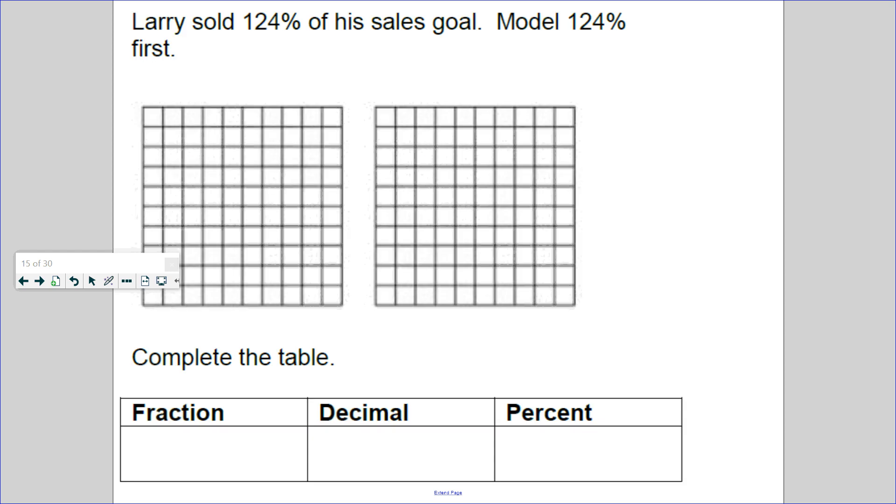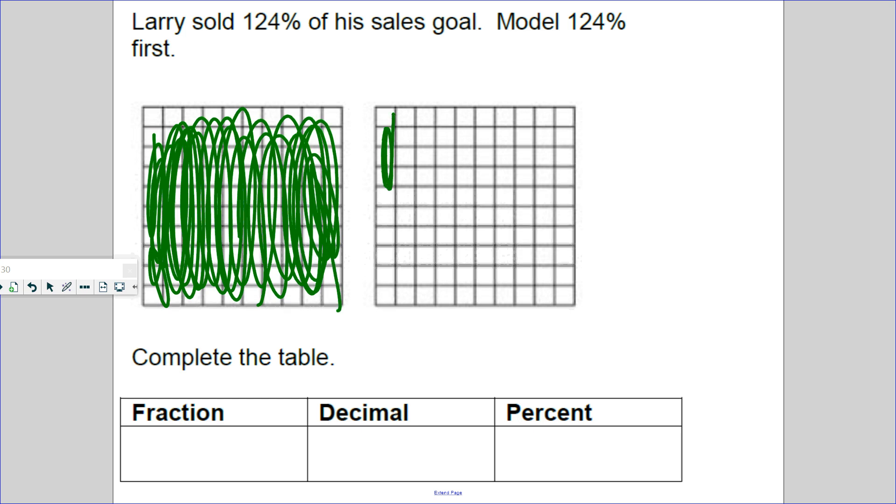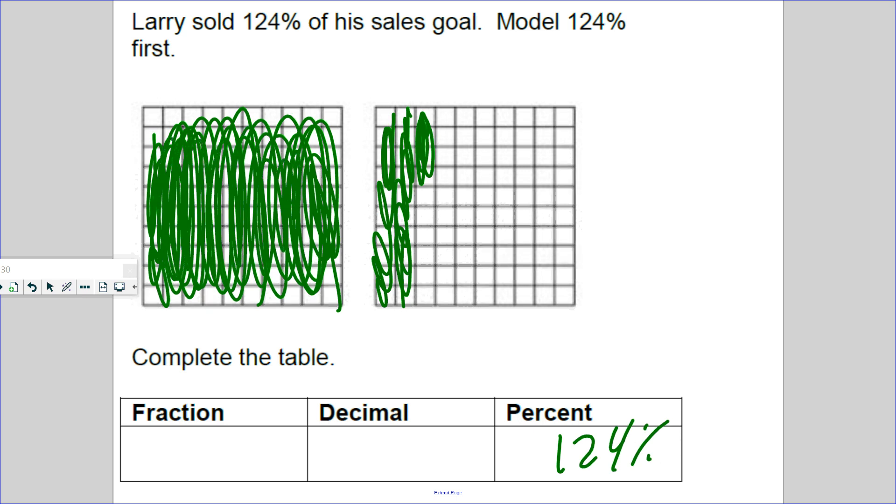And the last one is probably the hardest. Larry sold 124 percent of his sale goal. Model this. If I shade in all of this, this is 100 percent. That's the whole thing. Then I shade in 24, so that's 124 percent. Then I shade in this whole section, that's one whole and 24 hundredths. Or I shade it in one whole, and what fraction is this? 24/100, which is equivalent to one and 24 hundredths.